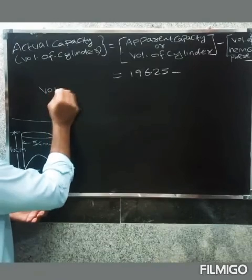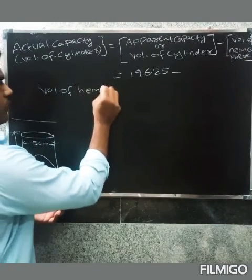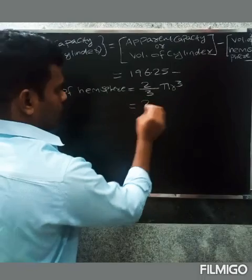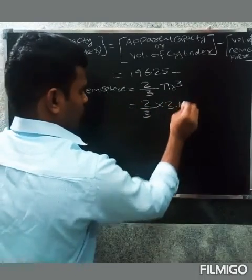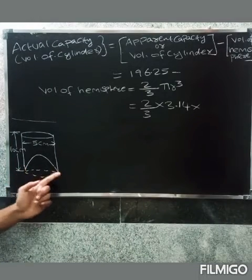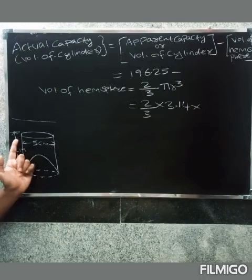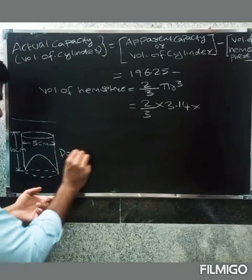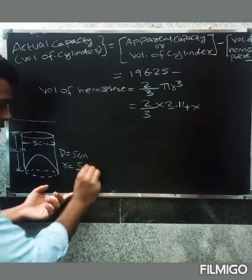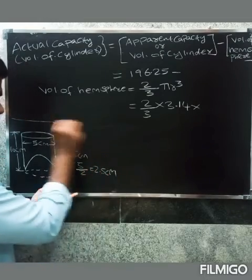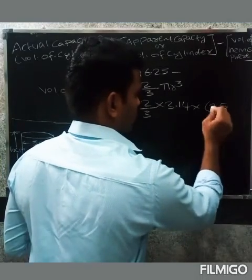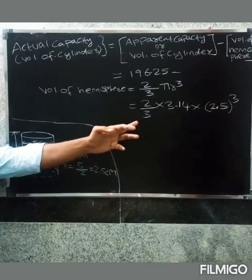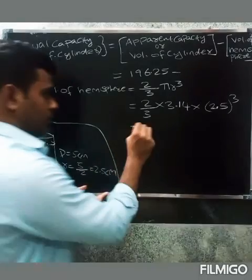Volume of hemisphere equals (2/3)πr³. So (2/3) × 3.14 × radius of hemisphere. The hemisphere diameter is the same, 5 by 2. The diameter is 5 centimeters, radius equals 5 by 2, which equals 2.5 centimeters. This gives 32.71 cubic centimeters.